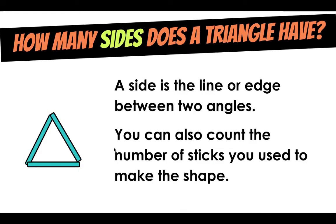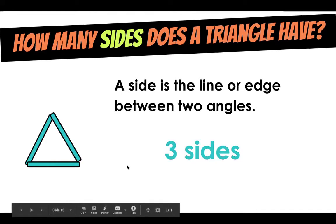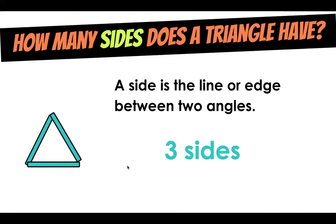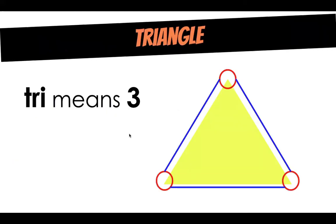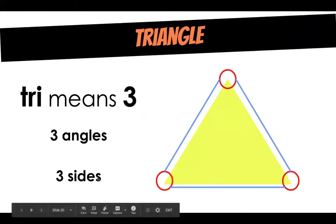So I want you to count what is the point where two of your sticks or pens or whatever you're using. How many points is it where they meet? The answer is three angles. One angle where these two meet, another angle where these two sides meet, and a third angle where those two sides meet. Now how many sides does a triangle have? A side is the line or edge between two angles. You can count the number of sticks you used to make the shape. We have three sides. One, two, three. Tri means three. So triangle, tri is our prefix. That means that a triangle, all triangles always have three angles and three sides.